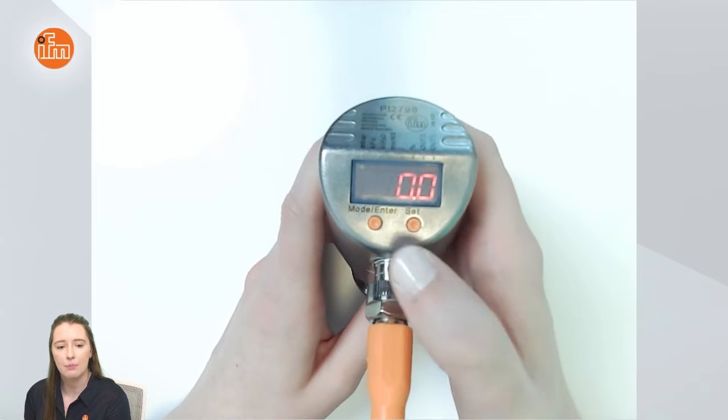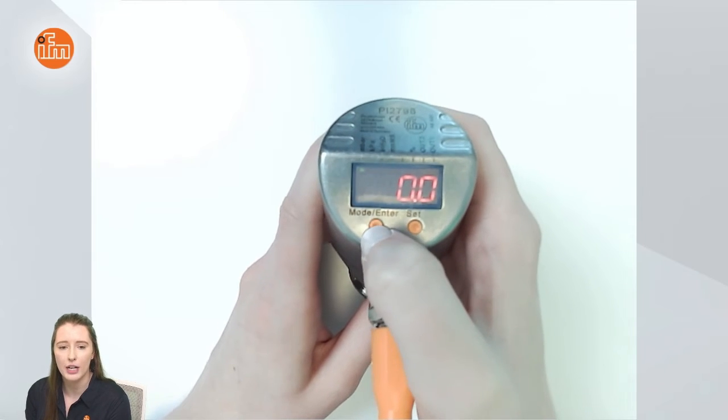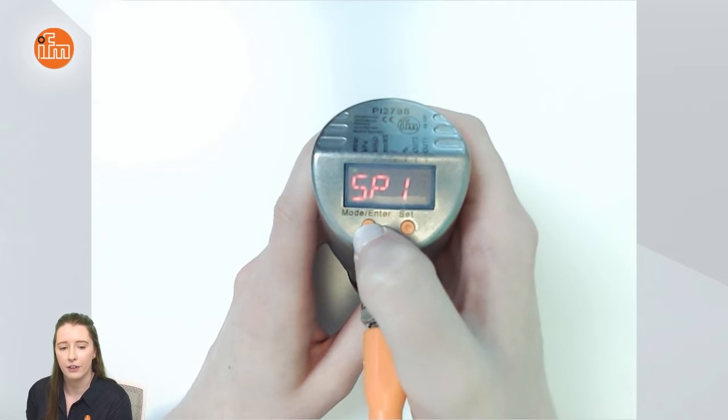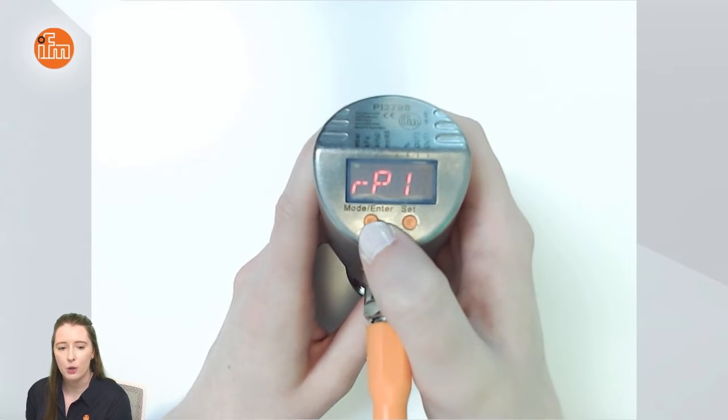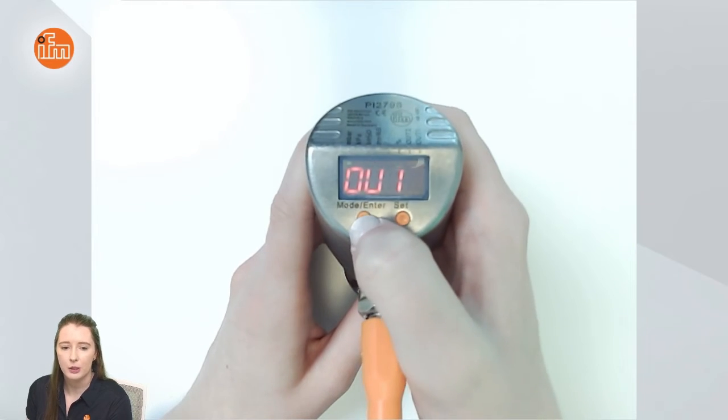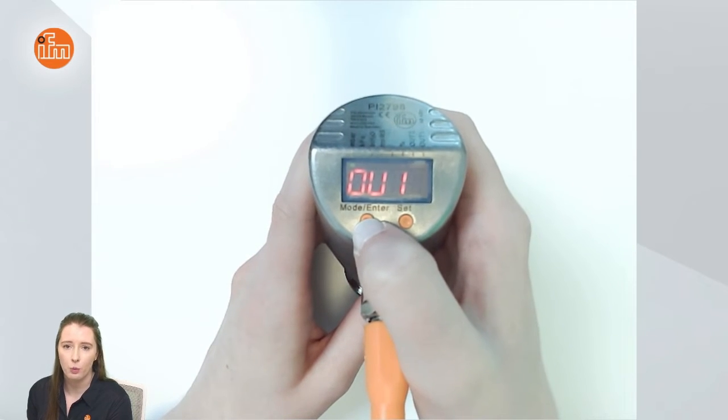So to begin to get into the menu structure you would press the mode enter button. Here you see sp1 which is your switch point for output 1. If you press mode enter again you would see rp1 for your reset point for output 1. If you press mode enter again you'll see output 1 which is where you can change your output 1 mode.